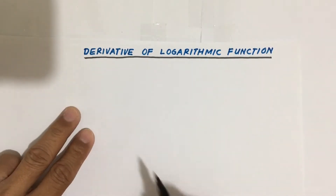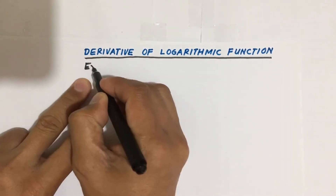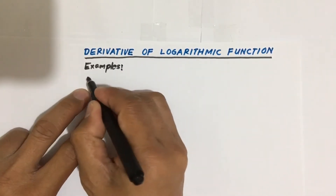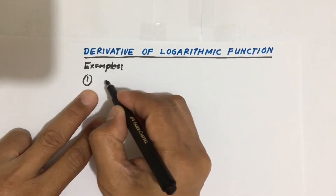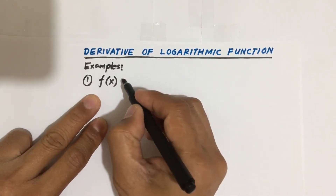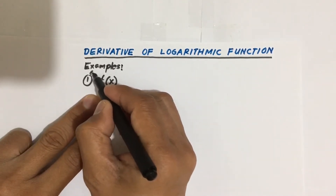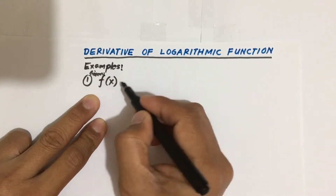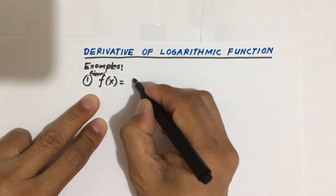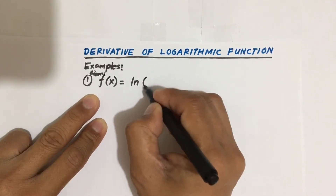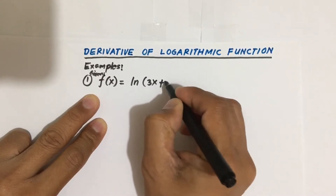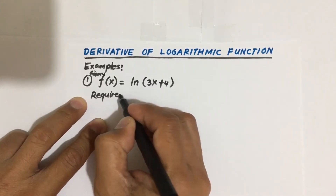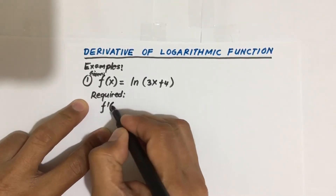Let's try to solve the first example. Example number one: we are given F of X equal to ln of 3x plus 4, and we are asked to solve for the derivative of this function, F prime of X.